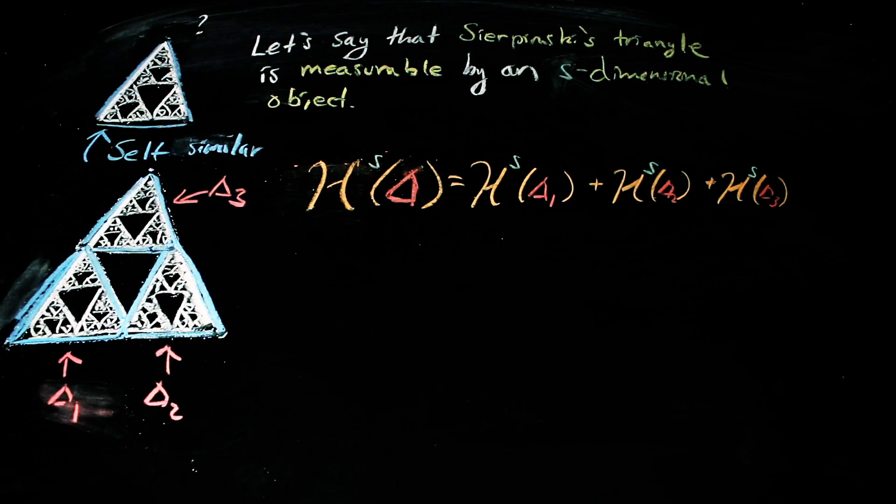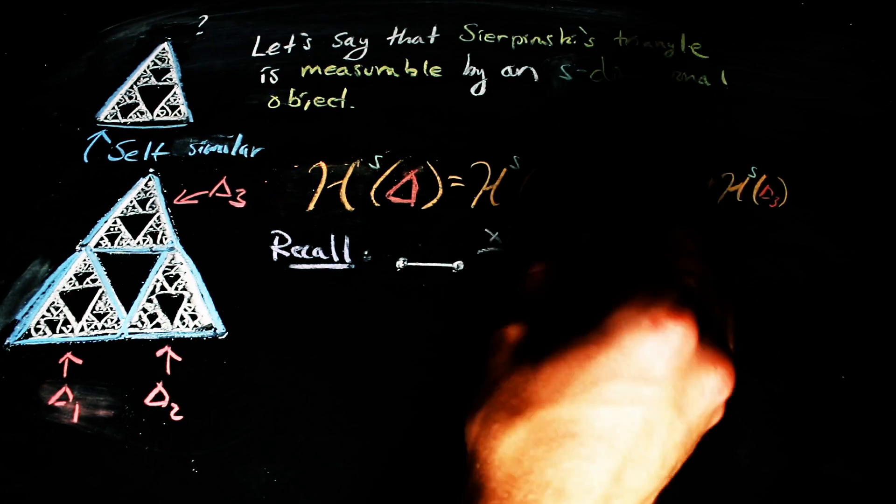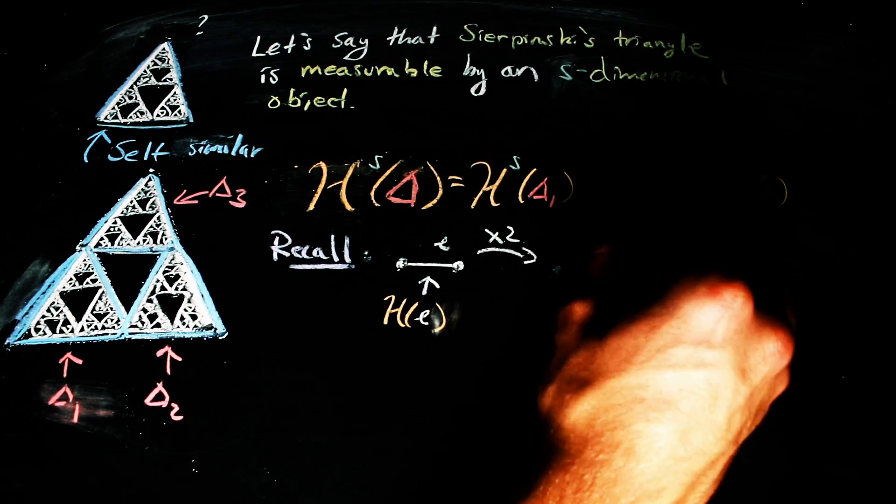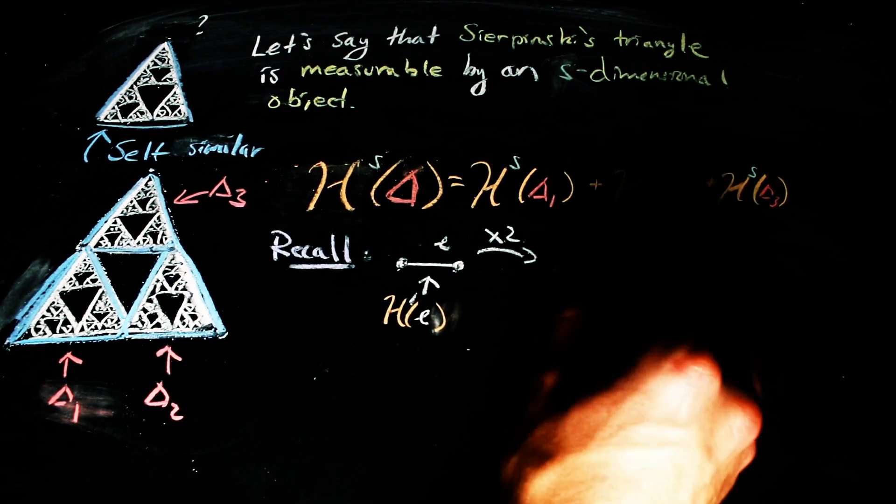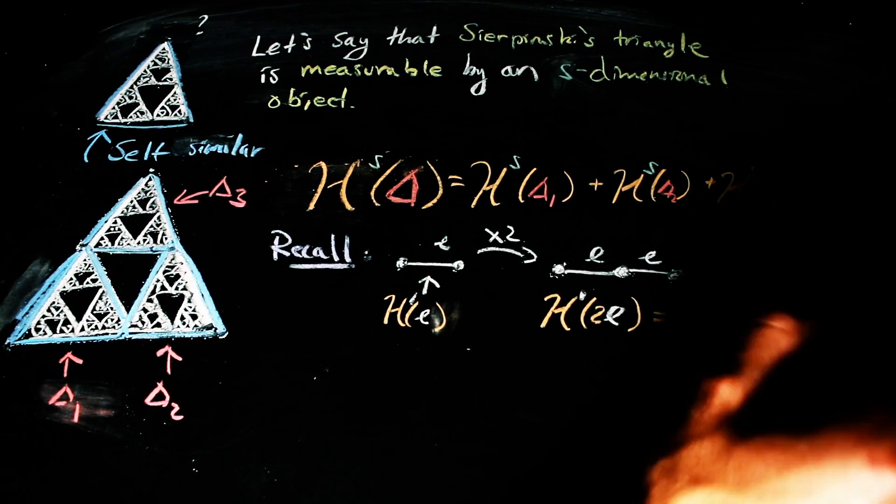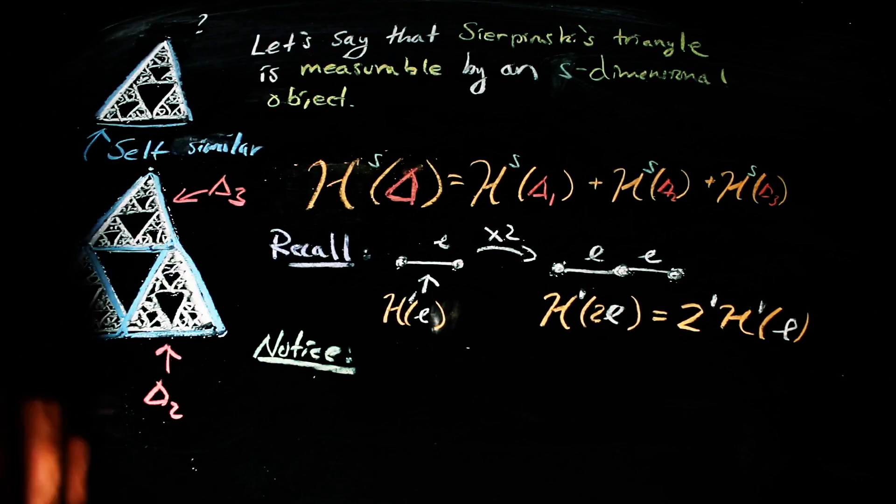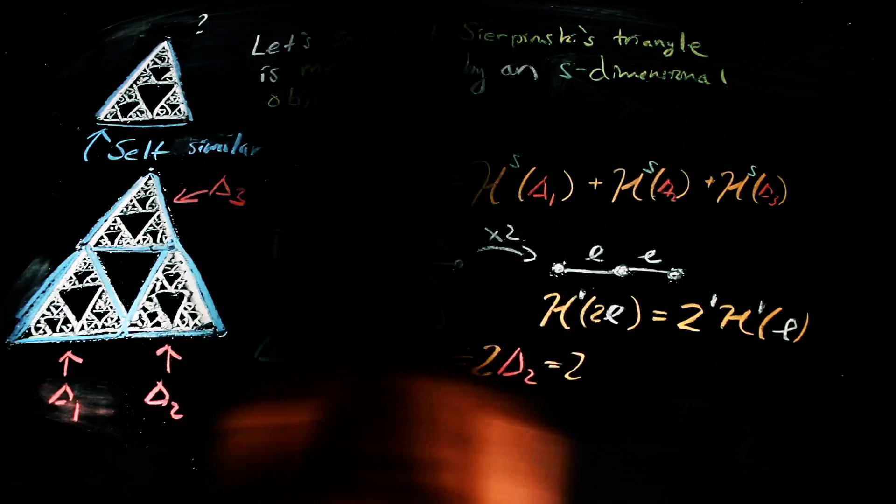Next, notice that if I scale each of the smaller triangles up by a factor of two, I get the entire triangle. And, like with the line and the box at the beginning, the measure of the scaling is given by the factor I scale by to the dimension which we said is S here.